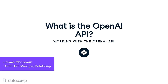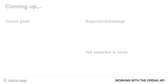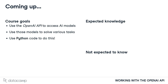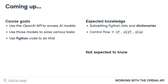I'm James and I'll be your host as we explore the artificial intelligence functionality available via the OpenAI API. In this course you'll learn how to use the AI models available through the OpenAI API to solve a wide range of real-world tasks. We'll be using Python code throughout the course and expect familiarity with topics like subsetting lists and dictionaries, control flow and looping. However, no experience with AI or machine learning is required.